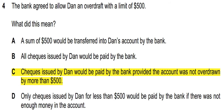Question 4: the bank agreed to allow Dan an overdraft with a limit of $500. What did this mean? Option C is correct: checks issued by Dan would be paid by the bank provided the account was not overdrawn by more than $500. The overdraft limit is $500, so it can be less than $500 but not more than $500.